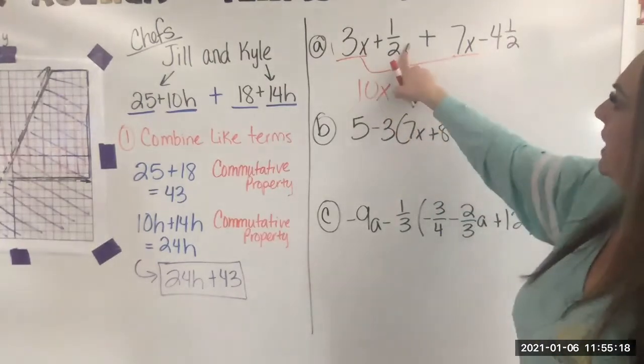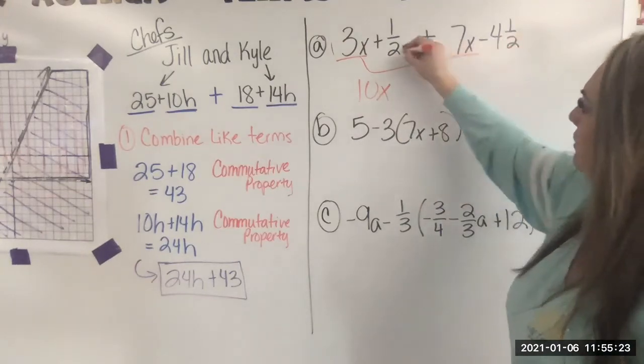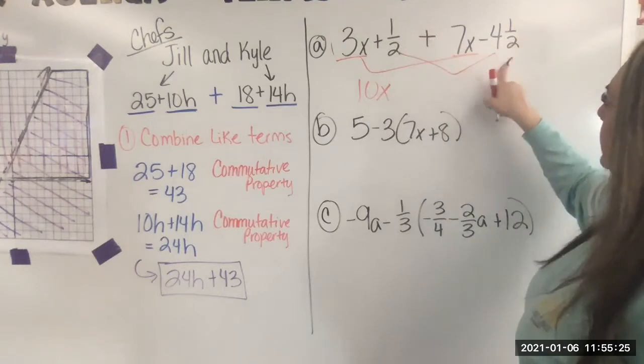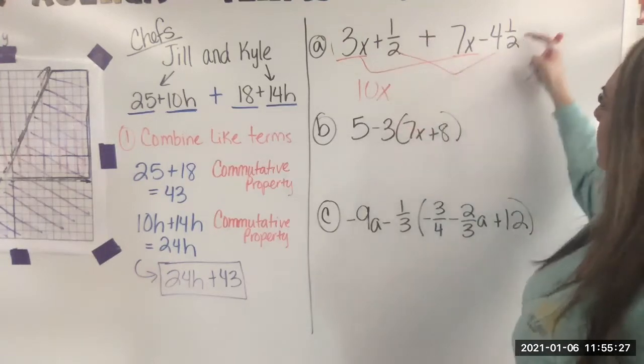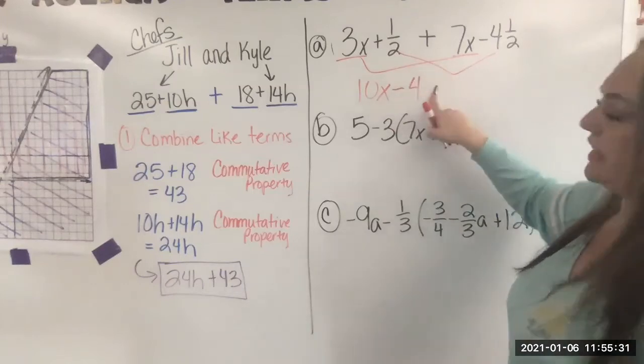Then I'm going to take a half. This is my constant. Is there another constant? Yes. Negative 4 and a half. When I add negative 4 and a half plus a half, it takes that away and gets me closer to zero. And now I'm just at negative 4.